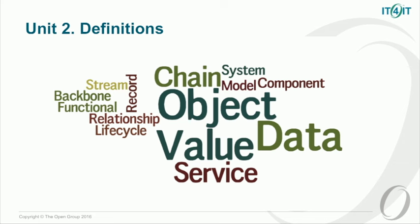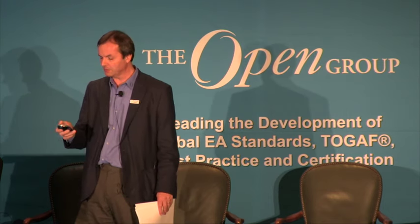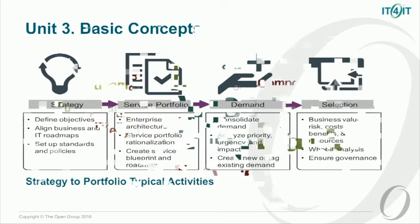Unit two covers definitions. We don't explicitly test the definitions — that's more an implicit thing throughout the rest of the syllabus — but these are the only definitions you need to know. Unit three is basic concepts, about understanding the scope, the value propositions, and the typical activities of the four value streams. It also includes the basic concepts of the reference architecture, including the service model, the information model, and the functional model, as well as understanding what functional components are at a high level. This corresponds pretty much to the spec — unit one looks like the first chapter, and unit three is probably chapter three or four.